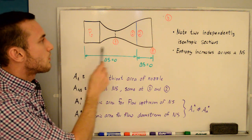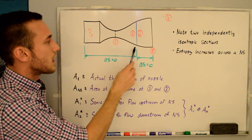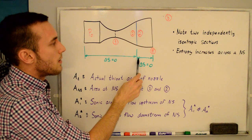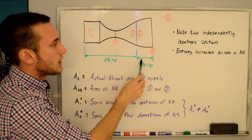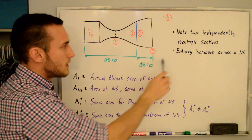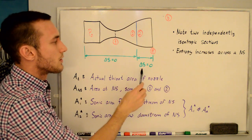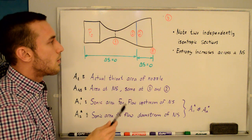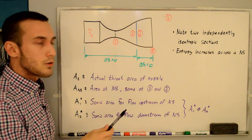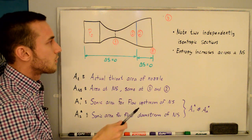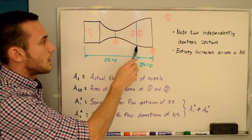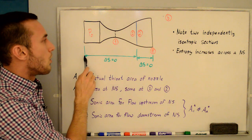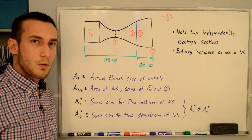Note that we have two independently isentropic sections. From the reservoir to the normal shock, delta S equals 0, and from behind the normal shock all the way to the exit is also isentropic. However, the entropy increases across the normal shock, so it is not isentropic all the way from the reservoir to the exit.